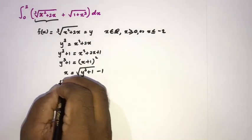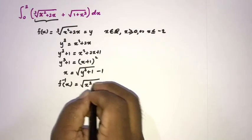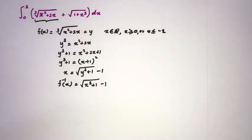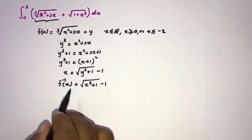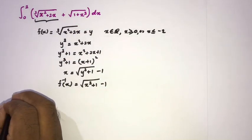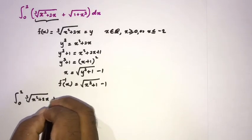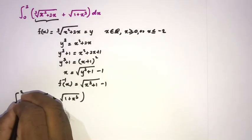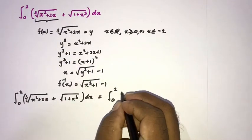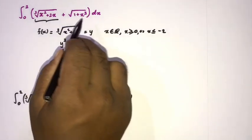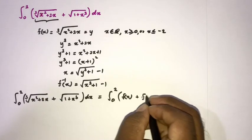So the inverse function of f(x) is f⁻¹(x) equals the square root of x³ plus 1, minus 1. Now we have f(x) and f⁻¹(x), so we can represent our integral from 0 to 2 as the integral of the cube root of x² plus 2x, plus the square root of 1 plus x³, dx — which equals the integral from 0 to 2 of f(x) plus f⁻¹(x), dx.